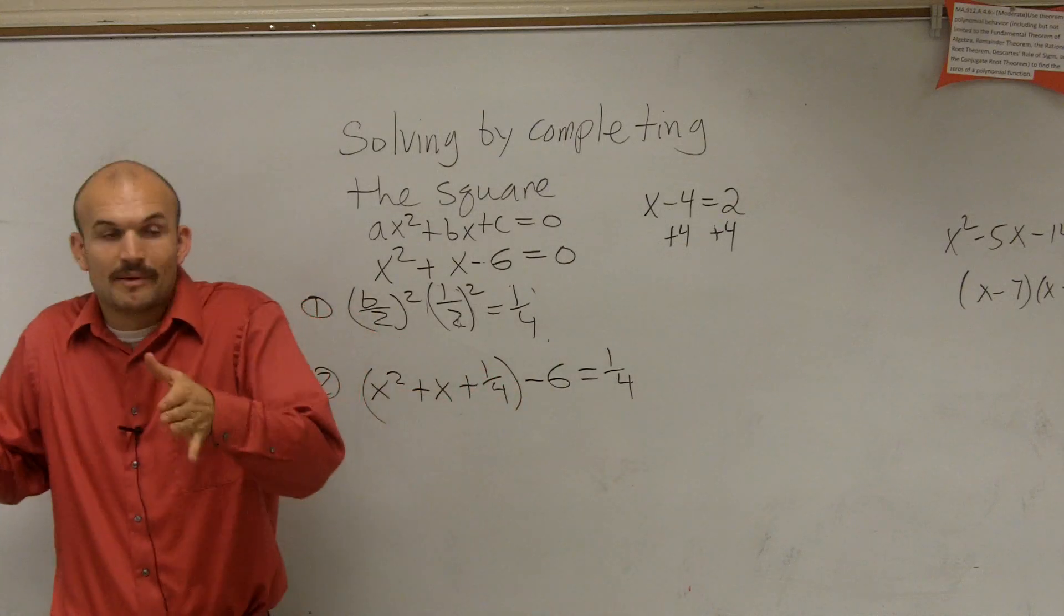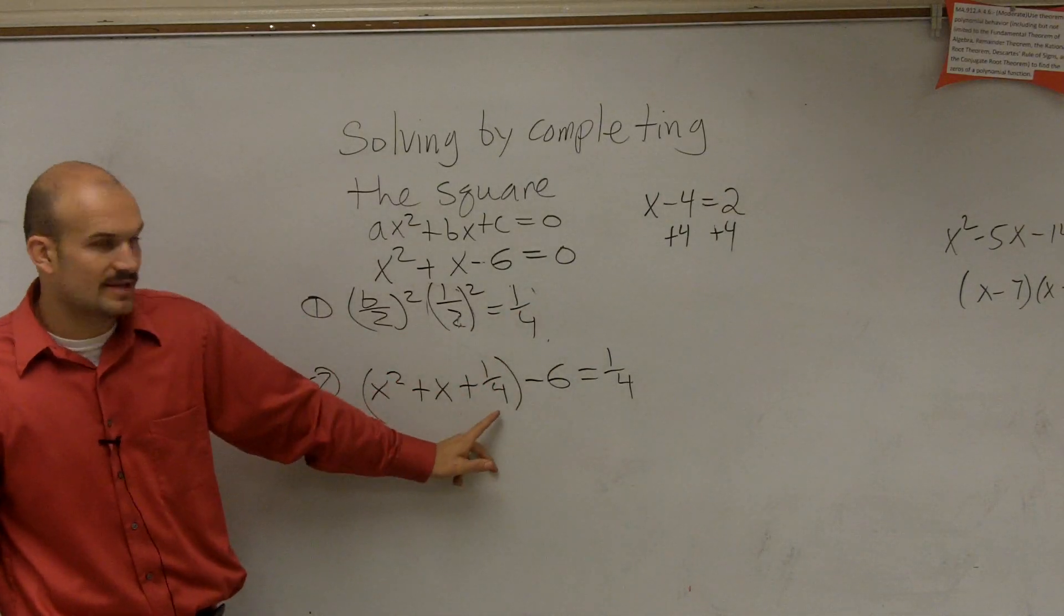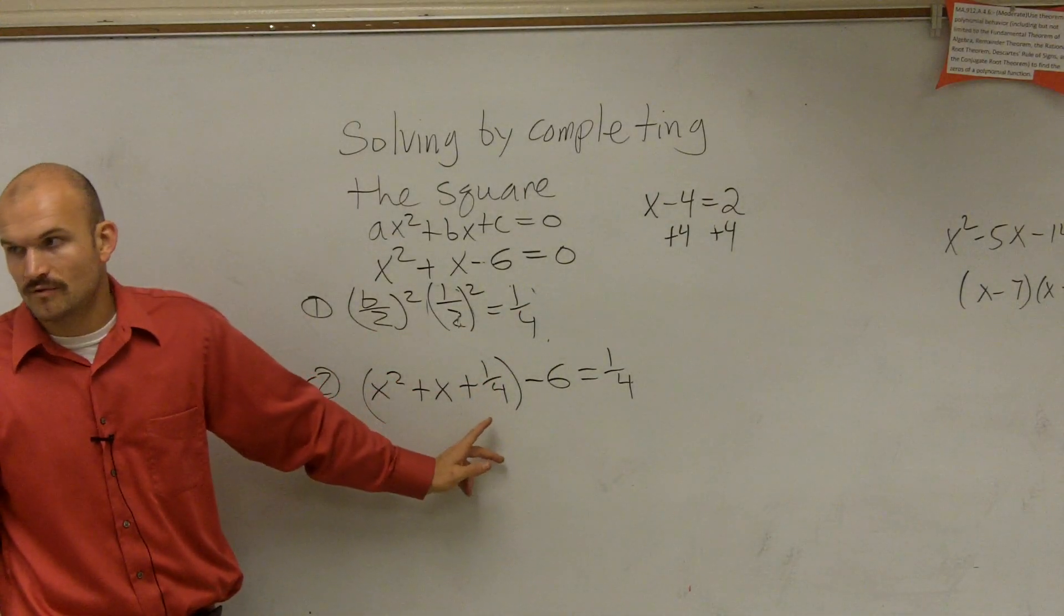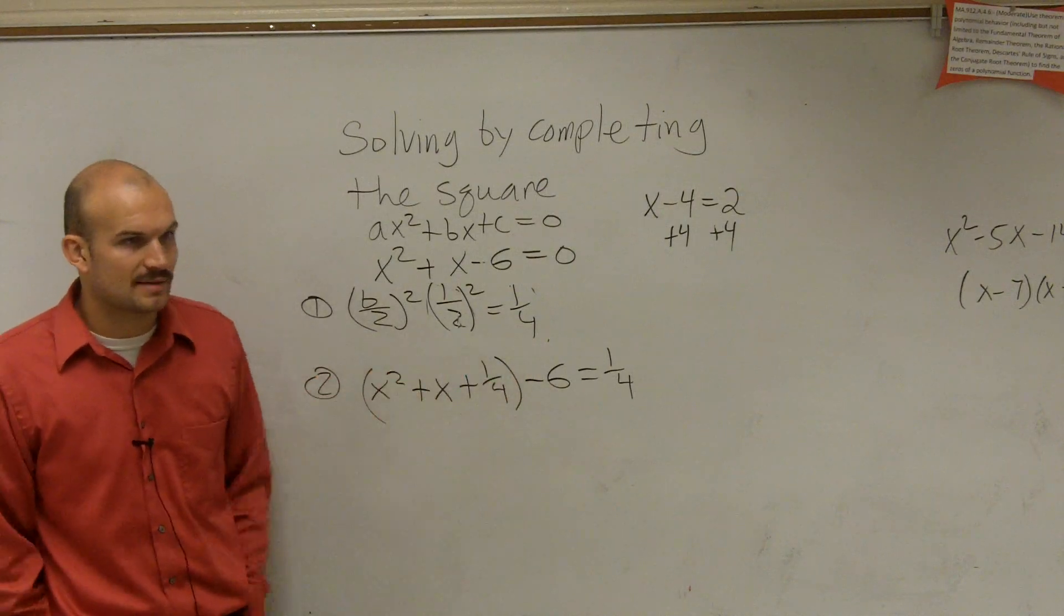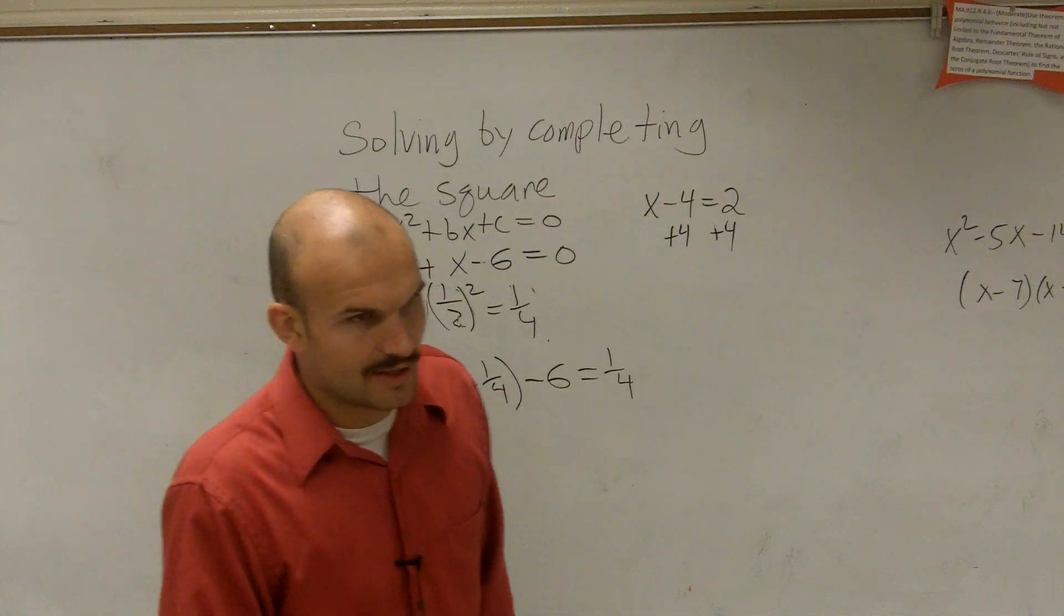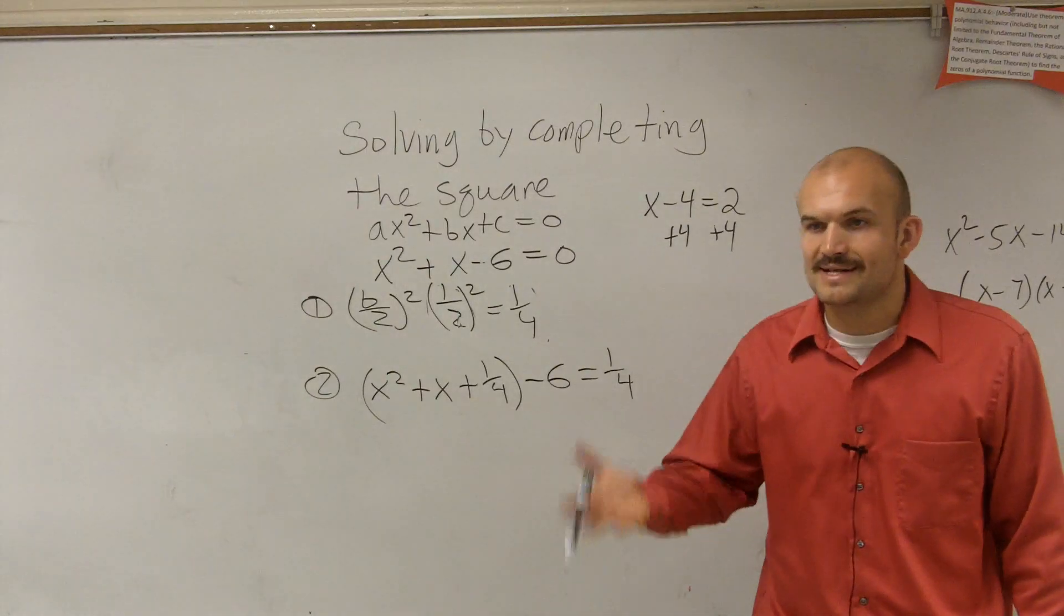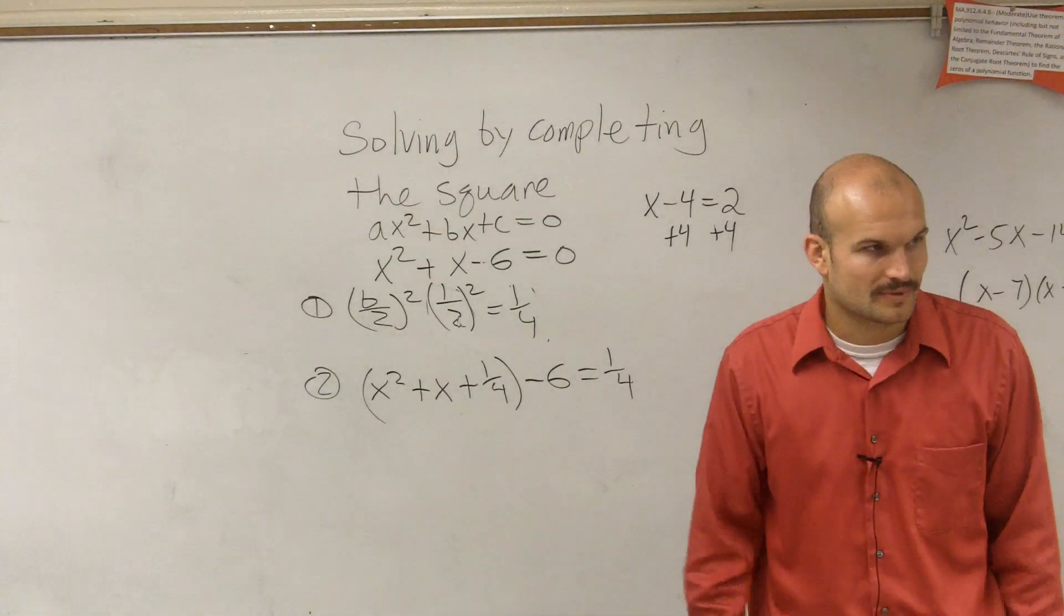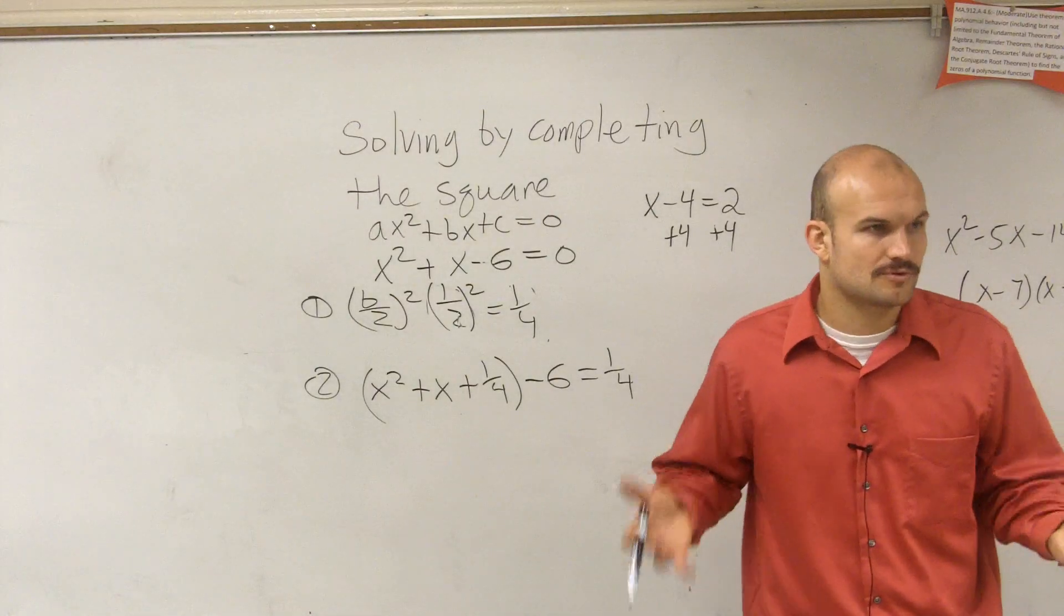So I added the 1 fourth on both sides. However, if you guys remember, it said find the value of c that completes the square. So what I'm going to do is I'm going to put the first three terms in parentheses. Now, what does completing the square do? If you guys want to think of completing the square, here's my best definition: It creates a perfect square trinomial. That's why we complete the square.